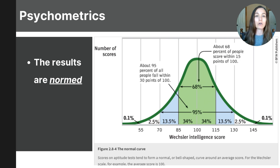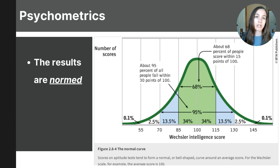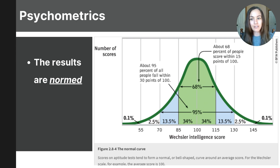As you learned in the previous video, IQ tests assign the score of 100 to represent the average or expected score for a particular age group. To keep the average score near 100, the Stanford-Binet and Wechsler scales are periodically re-standardized. This means that if you recently took the WAIS fourth edition, your score was compared to the most recent performance sample, which was tested in 2007, not the first sample tested in the 1930s.